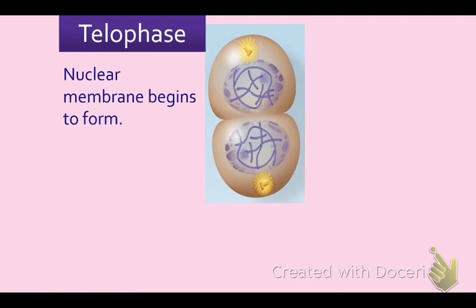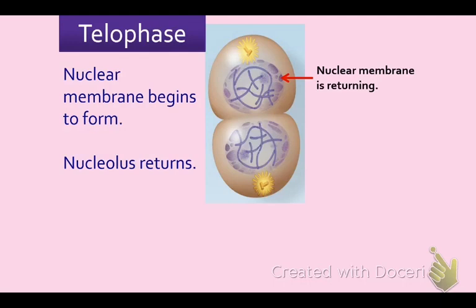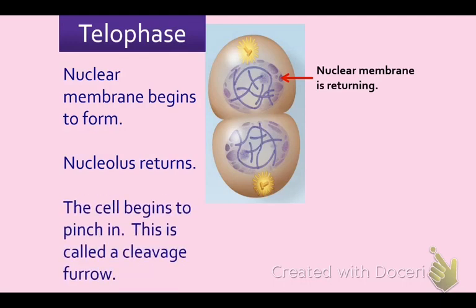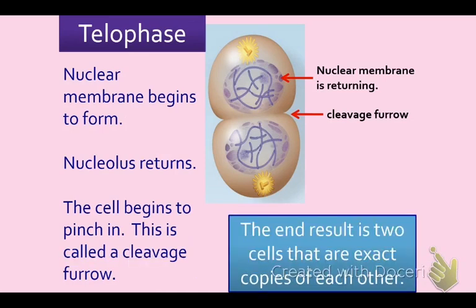In telophase, the new nuclear membrane begins to form and starts to return, the nucleolus starts to return, and the cell begins to pinch in. This pinch is called a cleavage furrow. The end result is two cells that are exact copies of each other — it just pinches in half and now you have two cells.